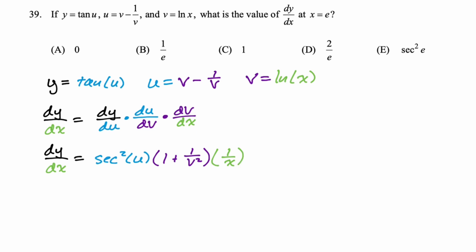Okay, so now how do we substitute? Well, we're told that x = e. If x = e, then v = ln(e), which is 1. If v = 1, then u = 1 - 1/1, which is 0. And if u = 0, we can just sub that in. Okay, so let's make all of our substitutions.